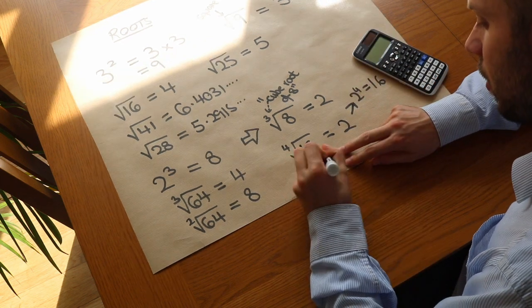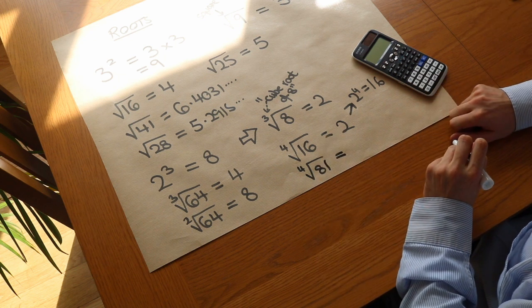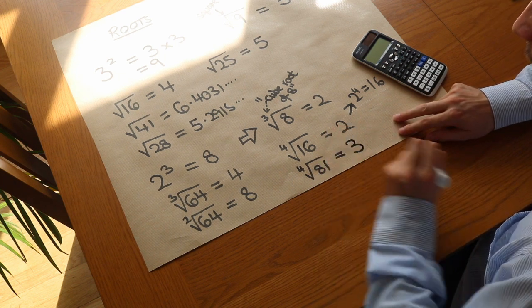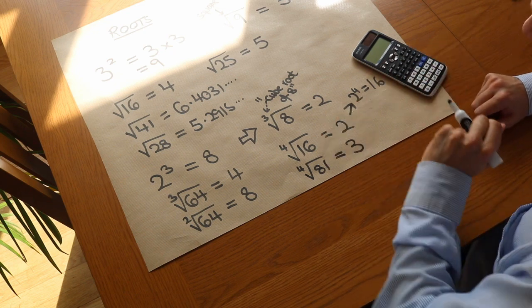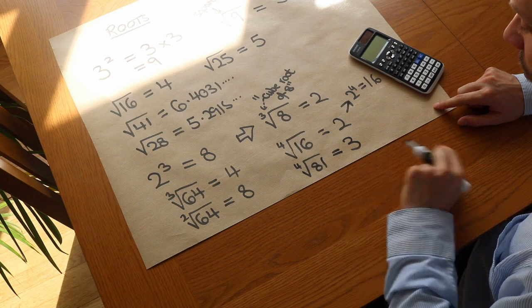What about the fourth root of 81? So we ask, what number to the power of 4 equals 81? Well it's 3. 3 times 3 times 3 times 3, i.e. 3 to the power of 4, is 81. So the fourth root of 81 is 3.